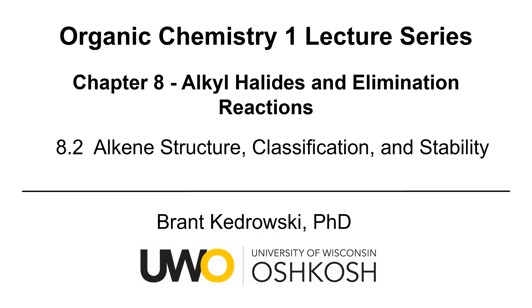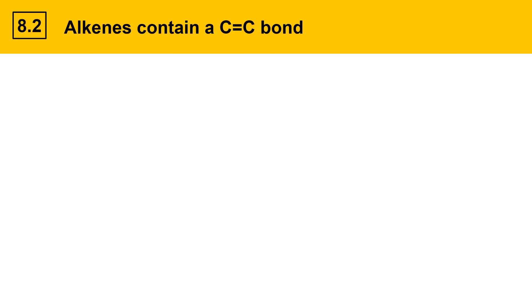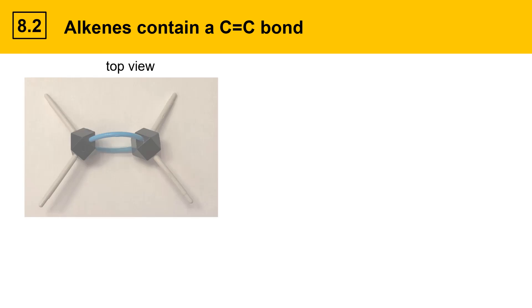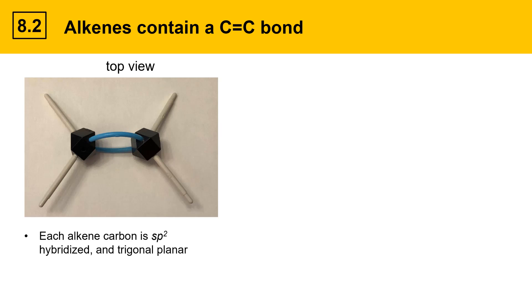Hello everyone, my name is Brant Kudrowski and this organic chemistry video covers alkene structure, classification, and stability. To understand elimination reactions, we really need to understand the C=C double bond. Here's a top view of an alkene — the carbon-carbon double bond is represented by the blue bonds shown here. Each alkene carbon is sp2 hybridized and the geometry is trigonal planar.